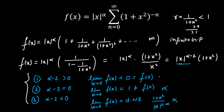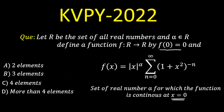So Case 2 and Case 3 are not continuous; only Case 1 gives continuity. That means α−2 must be greater than 0, which means alpha must be greater than 2. The values of alpha are 3, 4, 5, 6, and so on till infinity — infinitely many values. So the answer is option D: more than 4 elements.